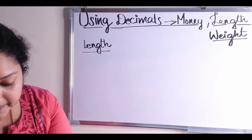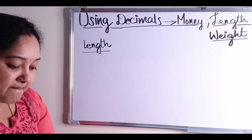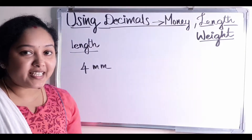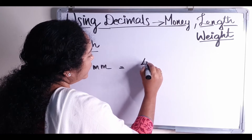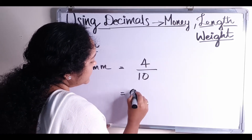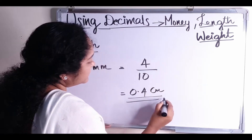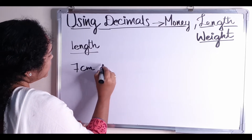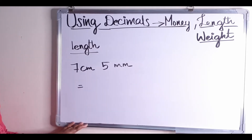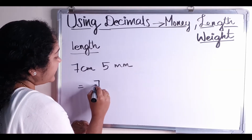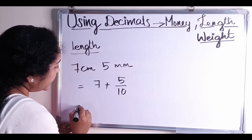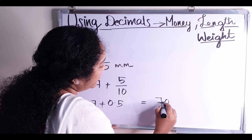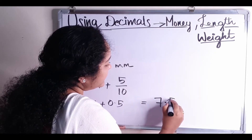Let's do an example. Convert 4 millimeters to centimeters using decimals. 4 millimeters is equal to 4 by 10, that is equal to 0.4 centimeters. Next one: 7 centimeters 5 millimeters. We already have 7 centimeters, so 7 plus 5 millimeters means 5 by 10, that is equal to 7 plus 0.5, which equals 7.5 centimeters.